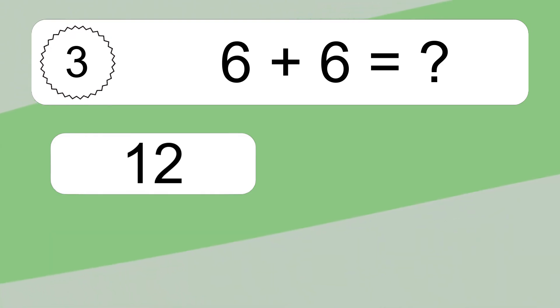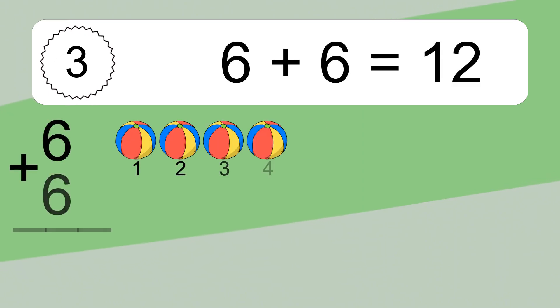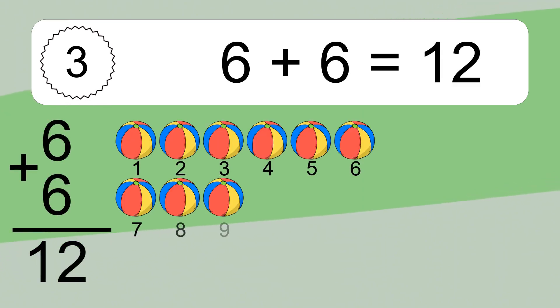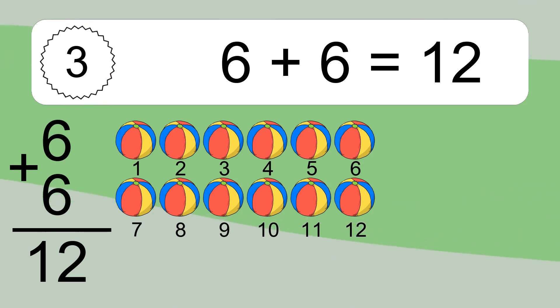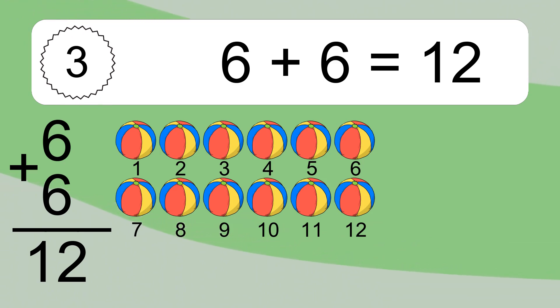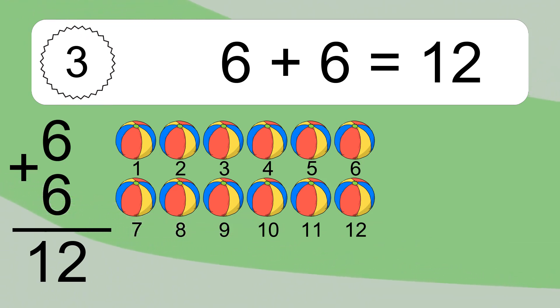6 plus 6 equals 12. Let's count it. 1, 2, 3, 4, 5, 6, 7, 8, 9, 10, 11, 12.